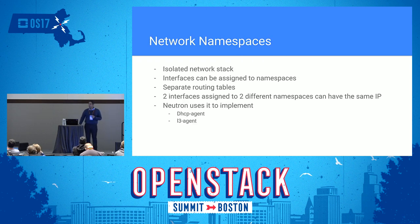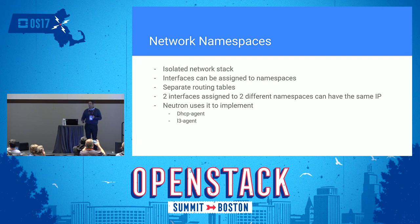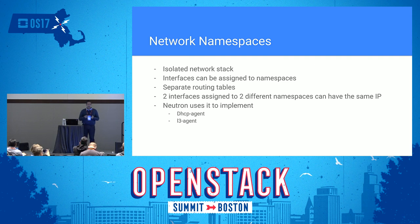Network namespaces are isolated network stacks in Linux — you could think of them as different installations of Linux from a network perspective. You can add different interfaces, different iptables rules, and different routing tables. They are totally isolated from other network stacks on the same host. This is a big advantage for OpenStack, where users create their own networks and set their own IPs. OpenStack uses network namespaces to implement routers and DHCP via the DHCP agent and the layer 3 agent.